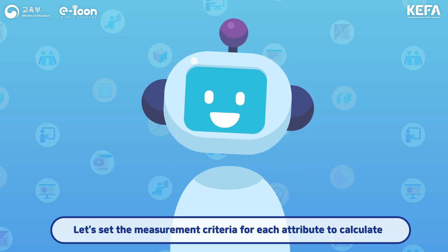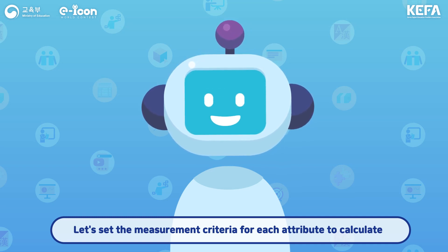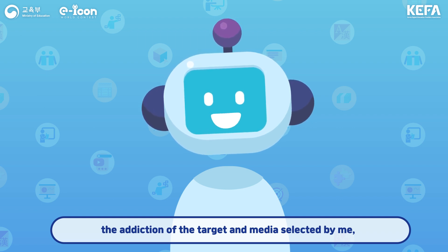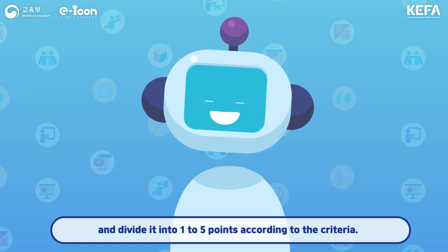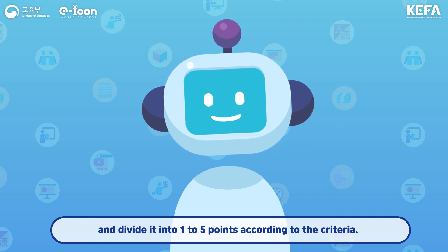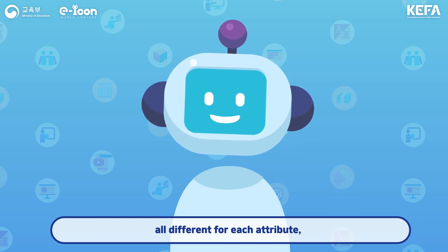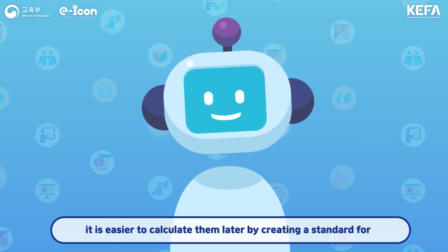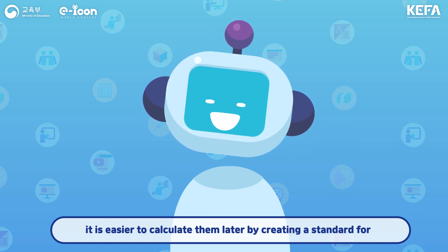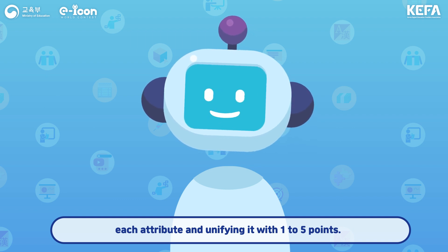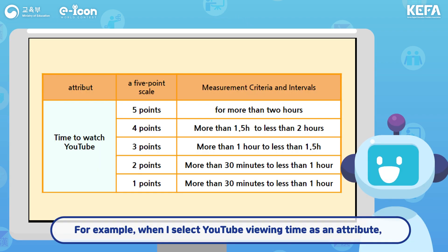Let's set the measurement criteria for each attribute to calculate the addiction of the target and media selected by me, and divide it into 1 to 5 points according to the criteria. Since the values of the attributes we selected are all different for each attribute, it is easier to calculate them later by creating a standard for each attribute and unifying it with 1 to 5 points.